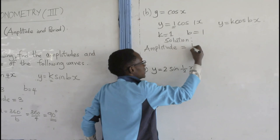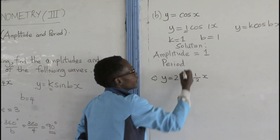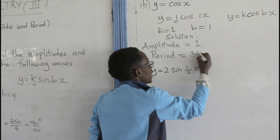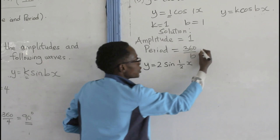And how do we find the period? The period from the general formula Y equals to K cos B x is given by 360 divided by B. But then the value of B in our case was 1. So, which gives us 360 divided by 1, which results into 360 degrees.